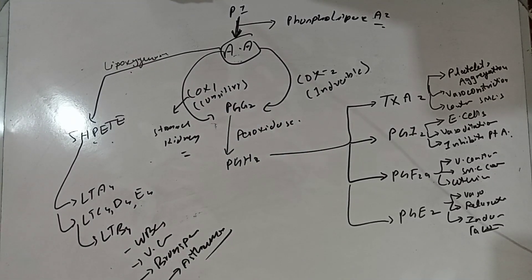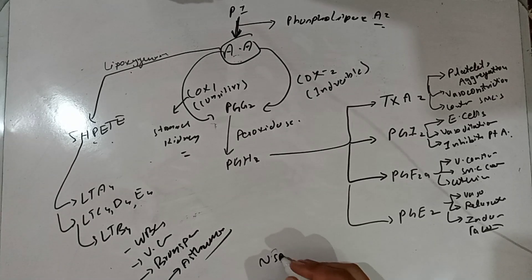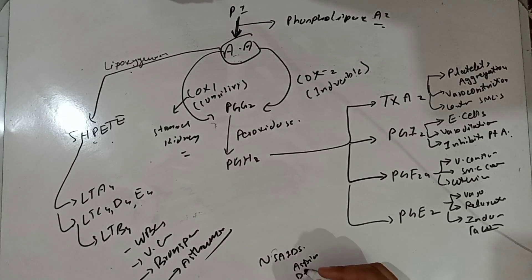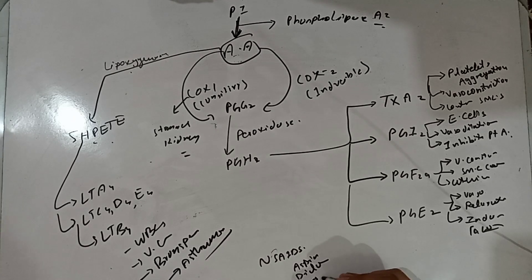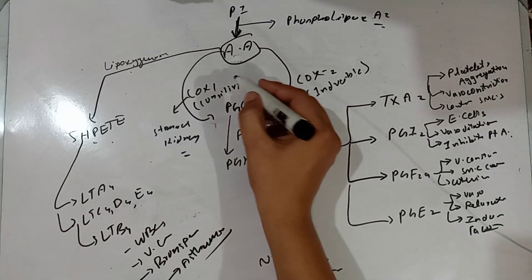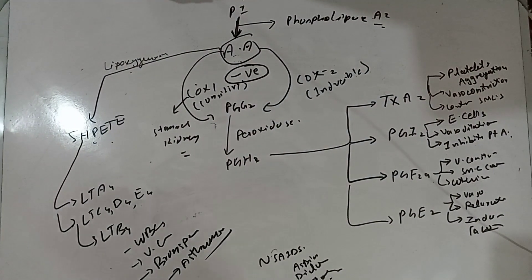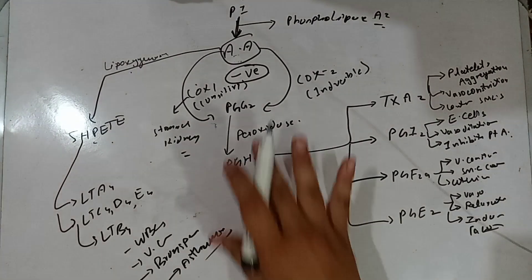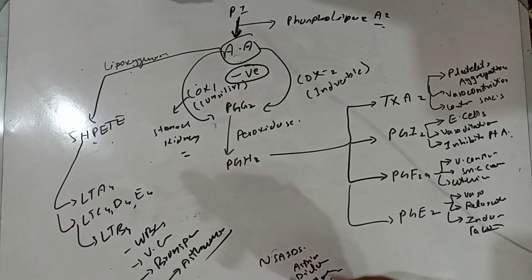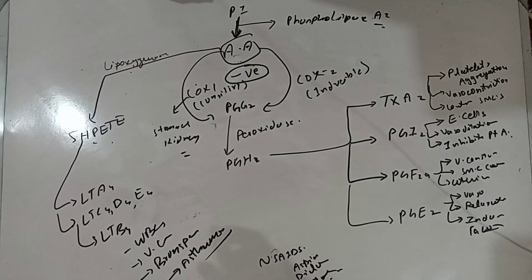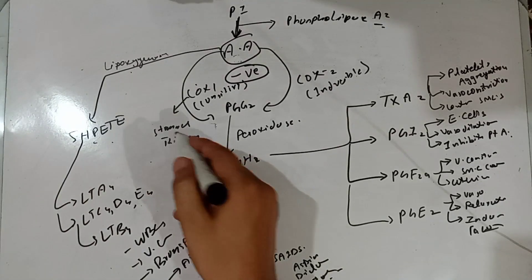Non-steroidal anti-inflammatory drugs (NSAIDs), which include aspirin, diclofenac sodium, ketorolac, and others, are non-selective COX inhibitors. They inhibit both COX-1 and COX-2, and they play their anti-inflammatory role through this inhibition of COX.